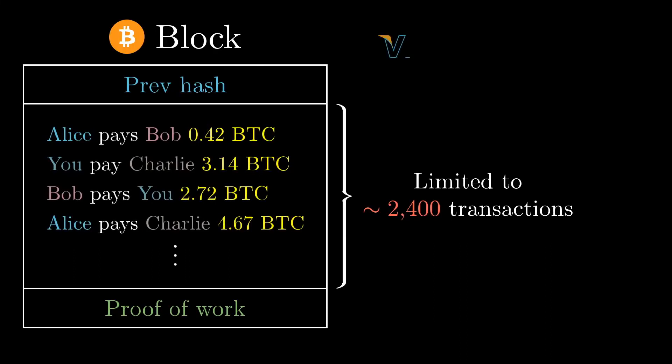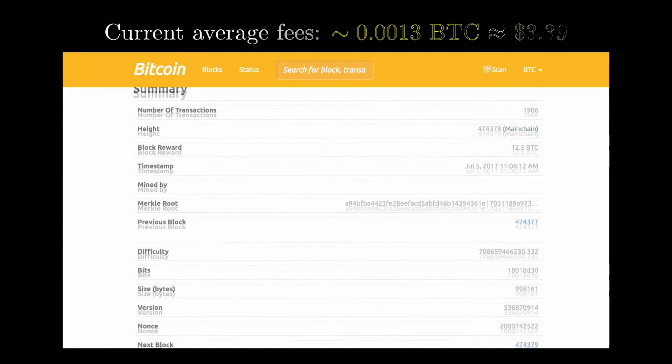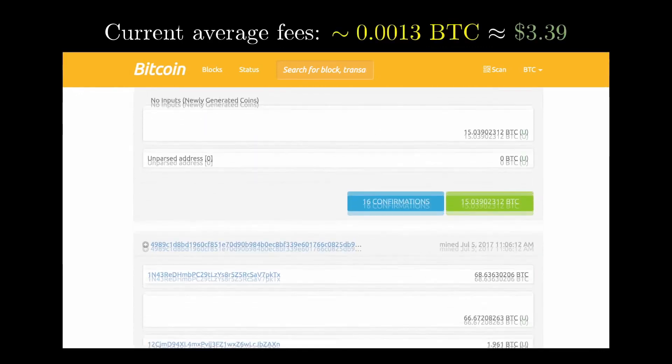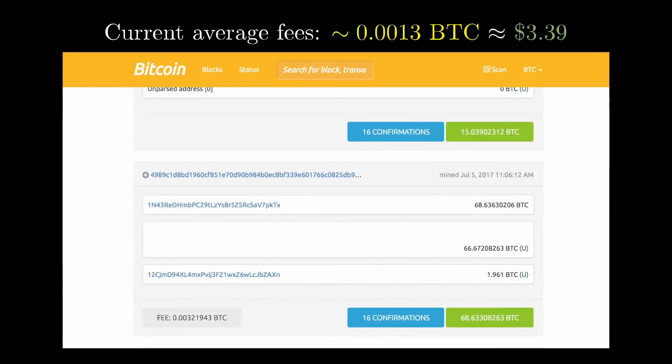For comparison, Visa processes an average of about 1,700 transactions per second, and they're capable of handling more than 24,000 per second. This comparatively slow processing on Bitcoin makes for higher transaction fees, since that's what determines which transactions miners choose to include in a new block.